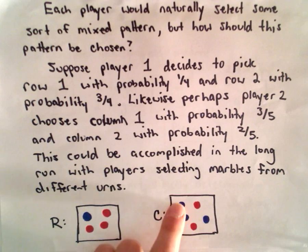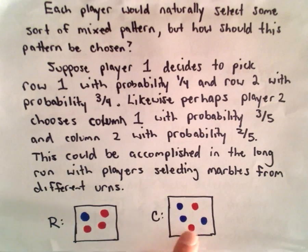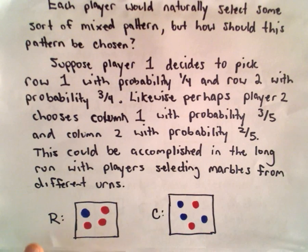Same thing with a column player. Maybe they have five marbles total, three blue, two red. Again, choosing a blue marble will mean they pick the first column. Picking a red marble will mean they choose the second column. So again, you could achieve these long-run probabilities with some random process like this.